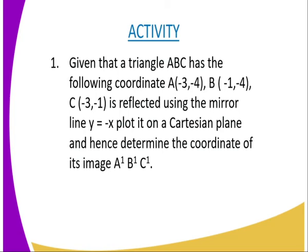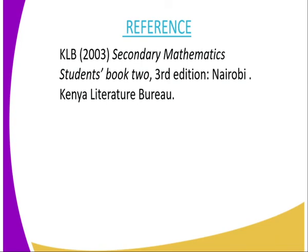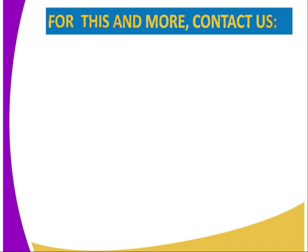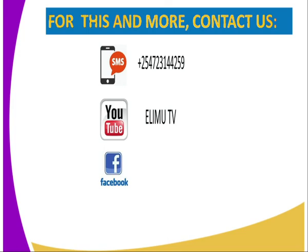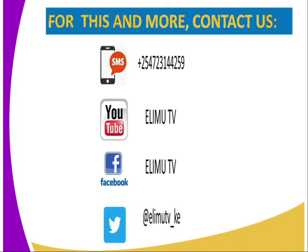The object is represented by triangle ABC. For reference, you can refer to the Secondary Mathematics student book two, published by the Kenya Literature Bureau. For more information, you can reach us at ElimTV via SMS, YouTube, Facebook, and Twitter at ElimTV underscore KE. Thank you for joining me in this lesson. Till next lesson, bye-bye.